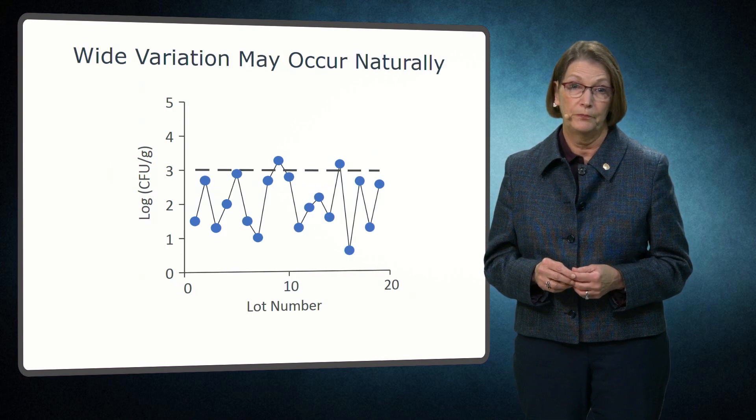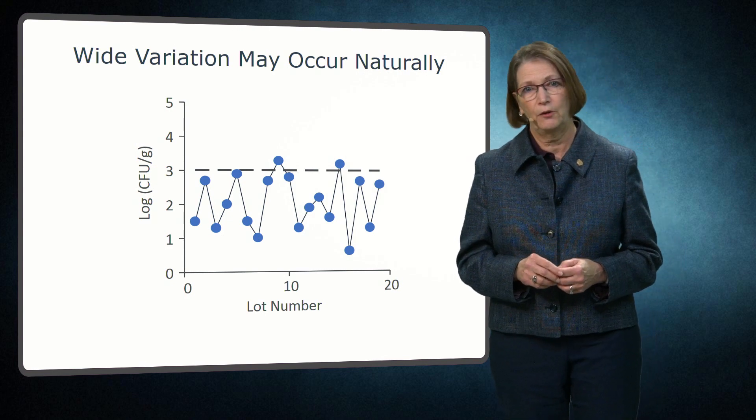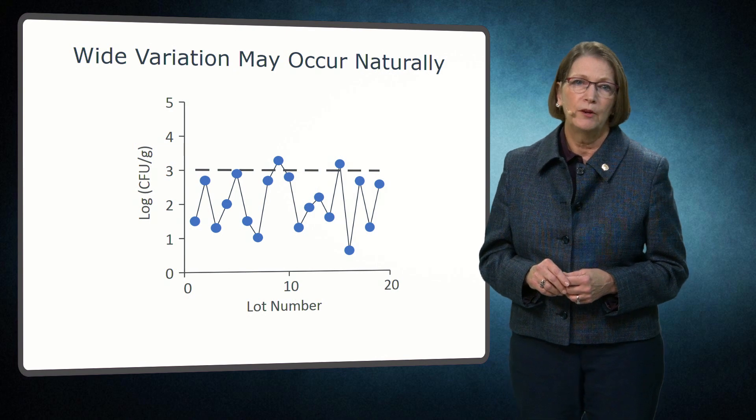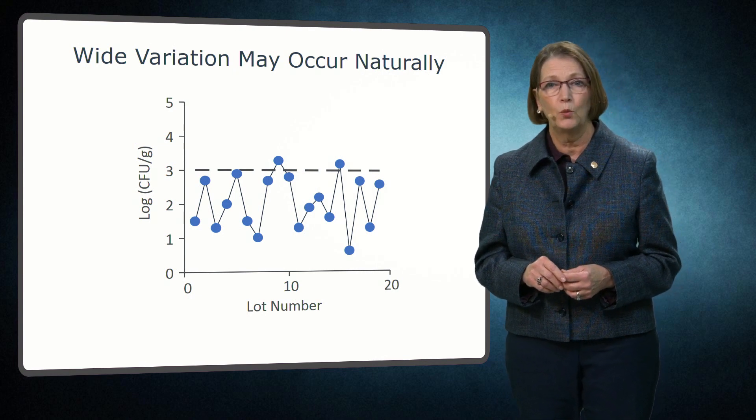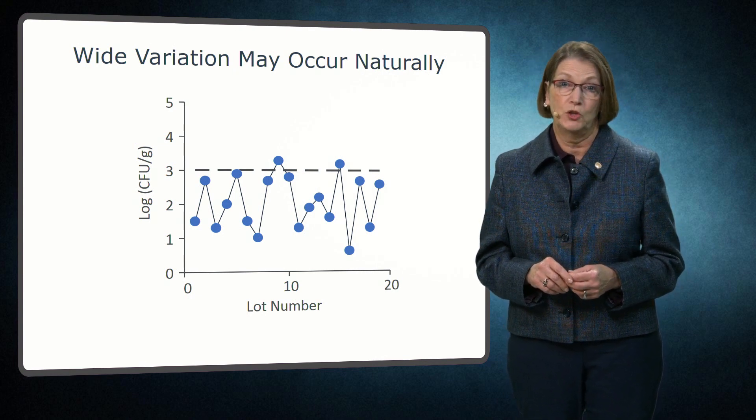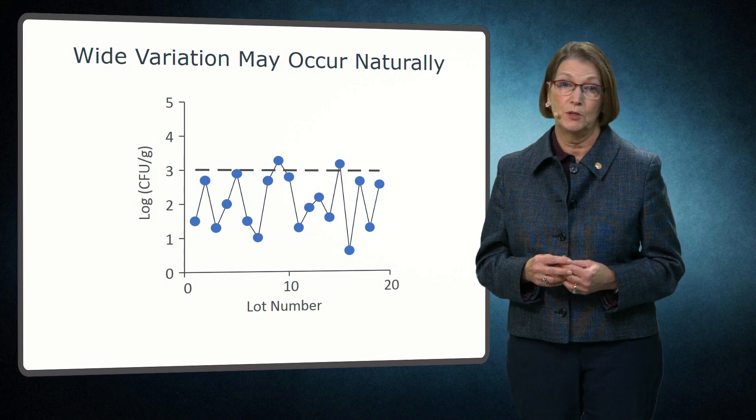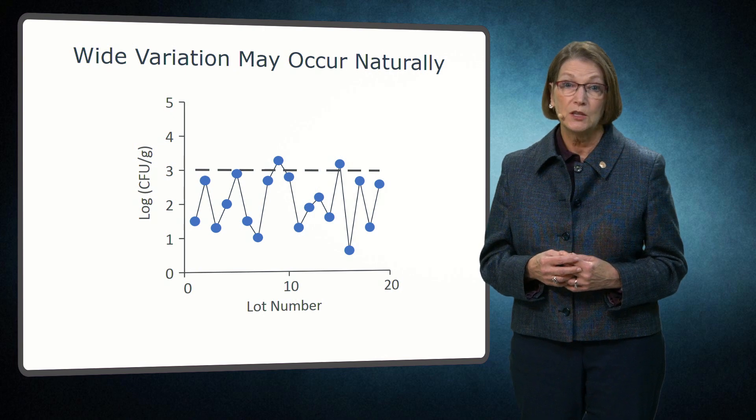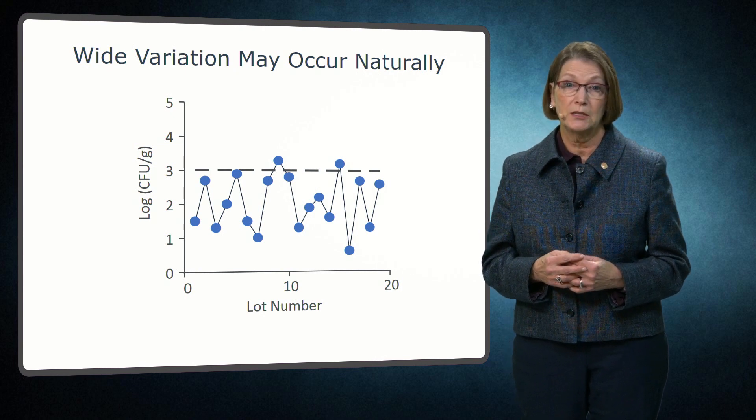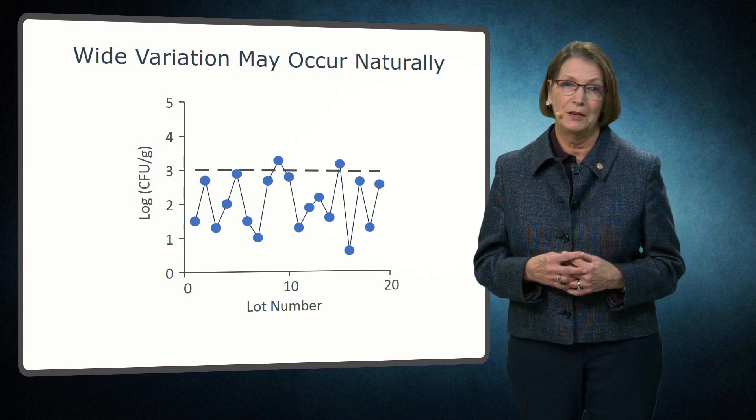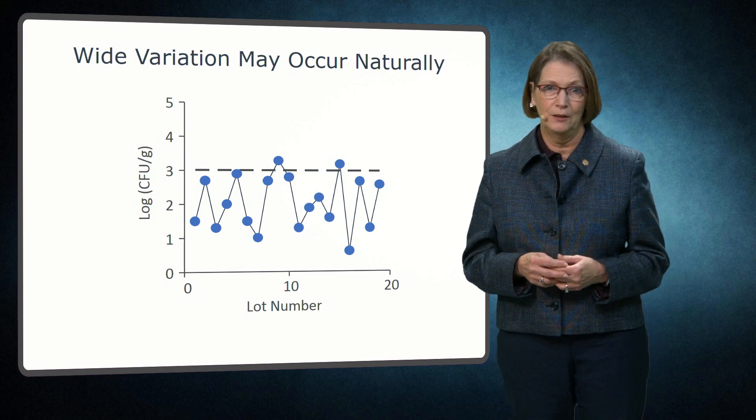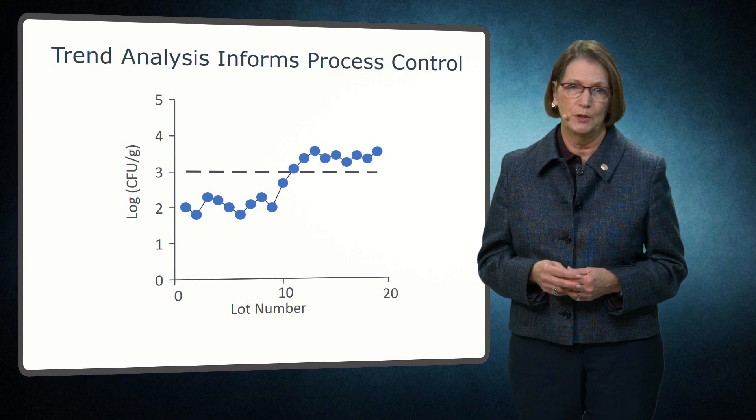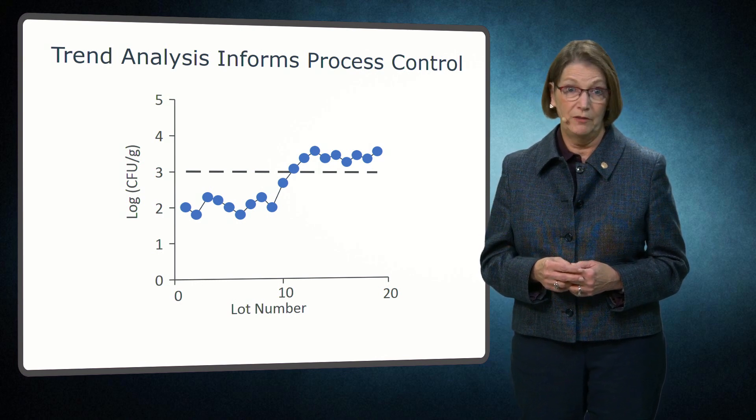Some processes have significant variability as illustrated in this chart. For example, variation can be observed in raw produce when weather patterns change. Seasonal variation can also be observed. A minimum of 30 lots of production is recommended to establish a baseline, but more data can be necessary to account for seasonality.